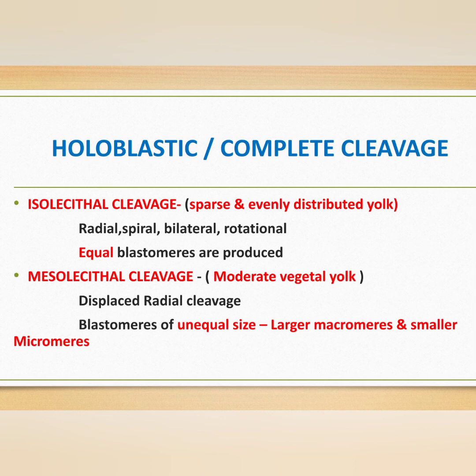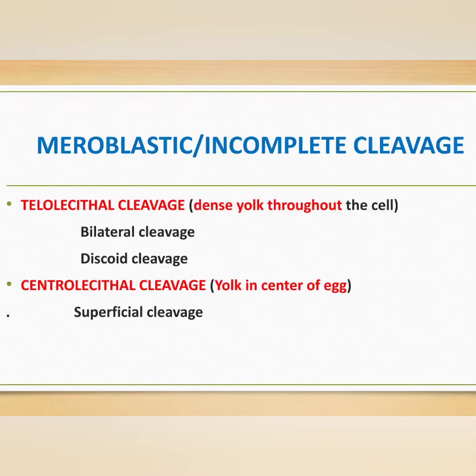Meroblastic or incomplete cleavage is further classified into telolecithal cleavage and centrolecithal cleavage. In telolecithal cleavage, dense yolk is present throughout the cell. Eggs of birds and fishes have only a small yolk-free region, so cell division occurs only in a small disc of cytoplasm at the animal pole. This type of cleavage pattern is called discoid cleavage.